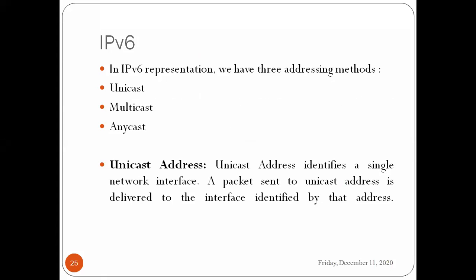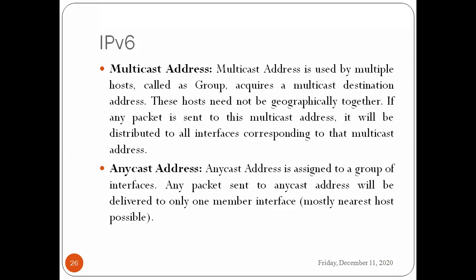IPv6 has three types of addressing methods: unicast, multicast, and anycast. Unicast addressing identifies a single network interface. A packet sent to a unicast address is delivered only to the one interface identified by that address. This is a one-to-one relationship.